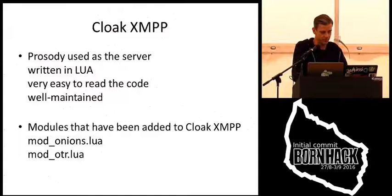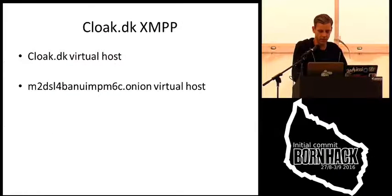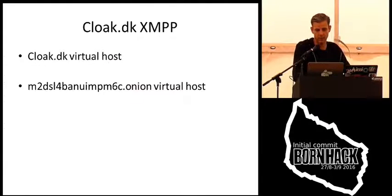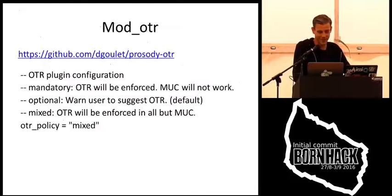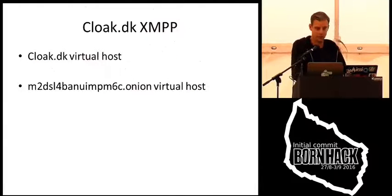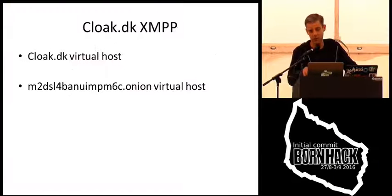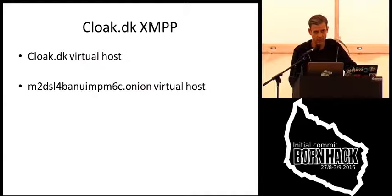It's set up with two virtual servers. You can either sign up to CloakDK and get a username at CloakDK, or you can use a username at the onion address that it also has — it's a very long name, very difficult to pronounce, but if you really want an onion user, you can get one. For all intents and purposes it's the same server. If you have a CloakDK user, you can still talk to people who are using other onion XMPP servers, and if you're using the onion server you can still talk to people who are not using onion XMPP servers — so if you have a friend on Jabber.CCC you can still talk to them.